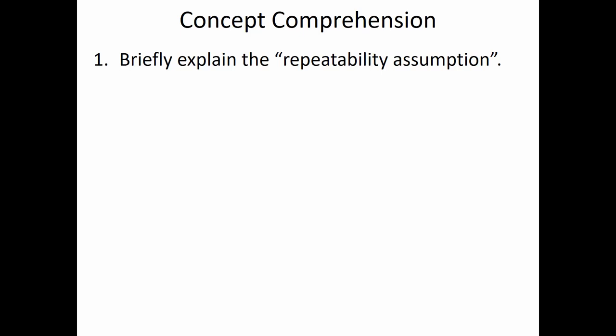The repeatability assumption is used when comparing alternatives with different useful lives — we have to make them match up so they have the same number of useful lives. Sometimes we repeat using the least common multiple approach, so if one thing lasts three years and another lasts four, we'd run them in cycles until terminating at 12 years. The repeatability assumption says that's fine, but keep in mind you're assuming the equipment you're buying now can be bought again in the future for the same price and will generate the same revenues.